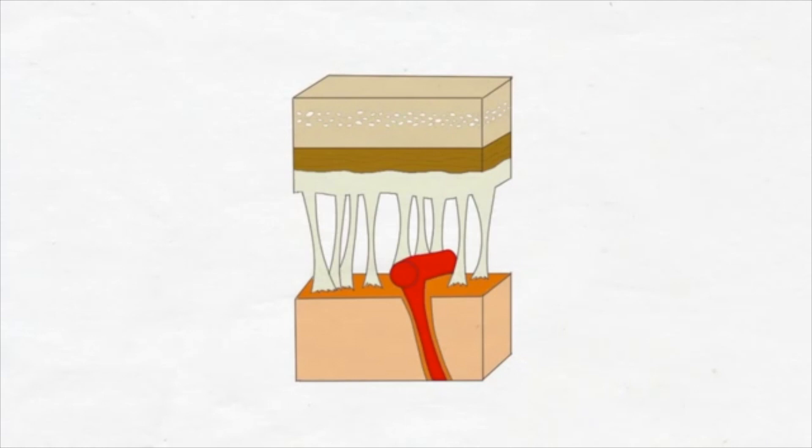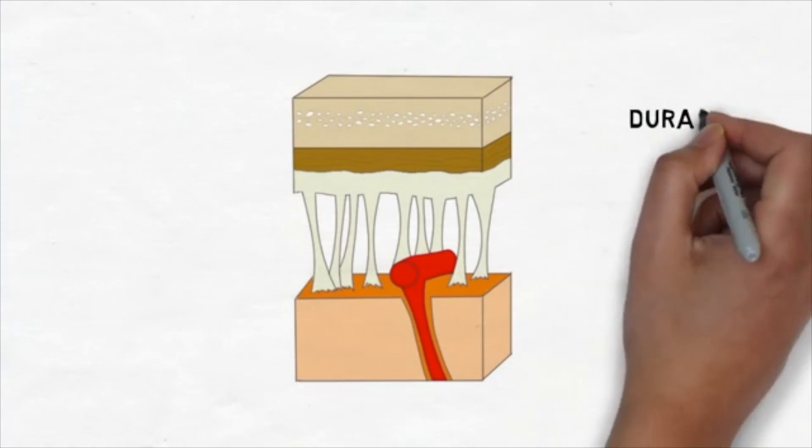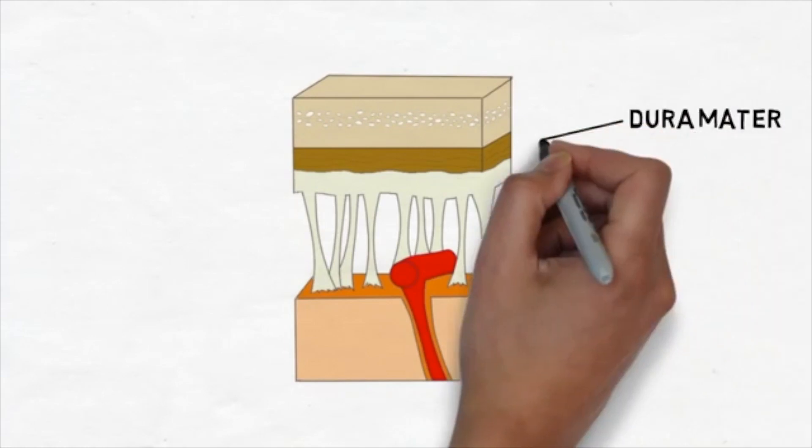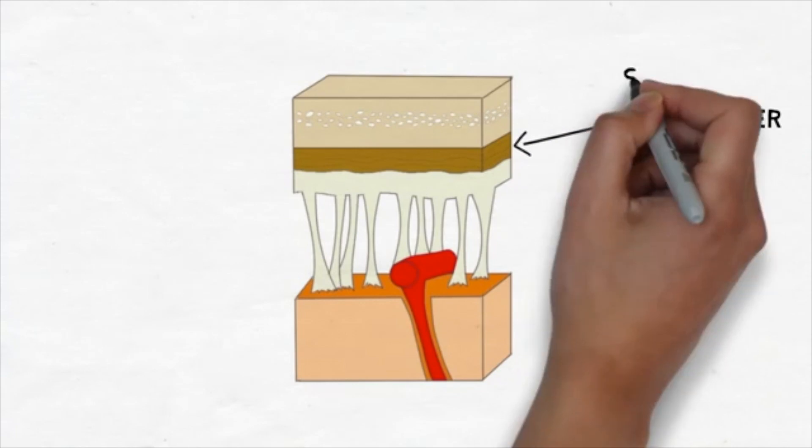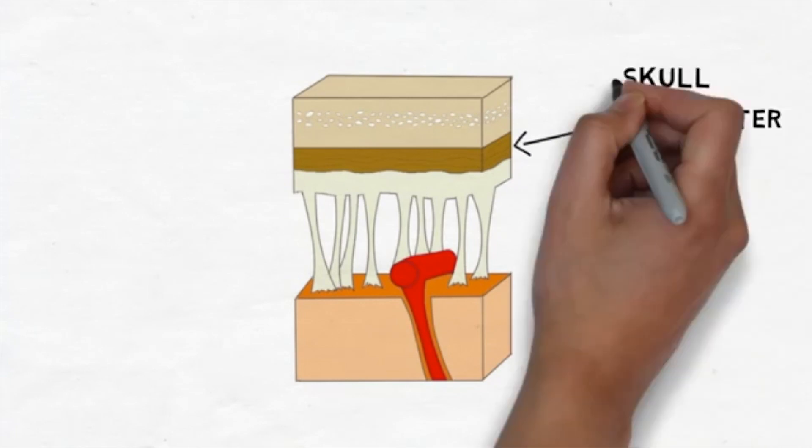The dura mater is a dense, strong, fibrous membrane covering the brain that provides tubular sheaths for the cranial nerves as they pass through the foramina in the skull.